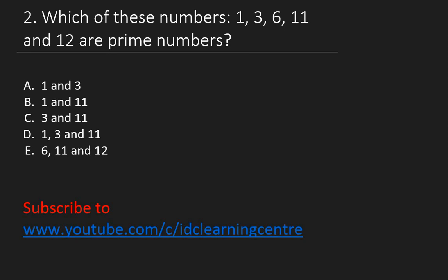Question 2: Which of these numbers — 1, 3, 6, 11, and 12 — are prime numbers? Prime numbers are numbers that cannot be divided by any other number except 1 and itself. The right answer is C: 3 and 11 are prime numbers. Note that 1 is not a prime number because it has only one factor — itself.